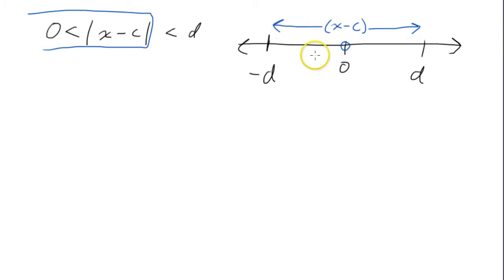So an absolute value means the distance from the origin or distance from 0. So the distance has to be something either to the right or to the left of 0.